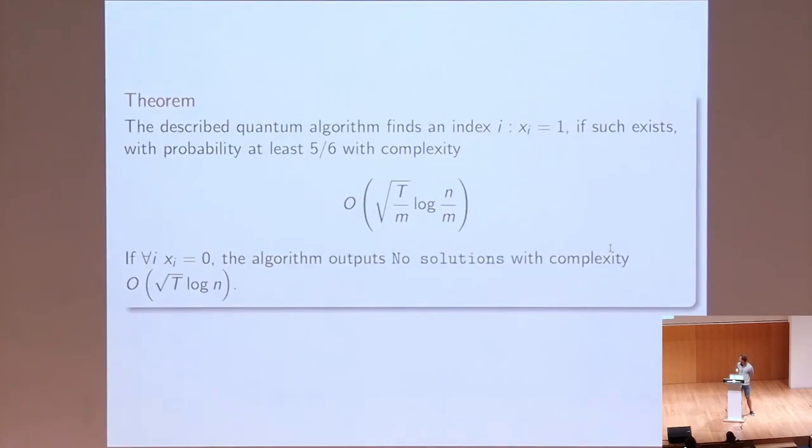And we show that this algorithm, indeed, finds a solution if one exists, with constant probability, and expected complexity of this order. And on the other hand, if there are no solutions, this algorithm answers correctly, there are none, with certainty, and in this many time steps.